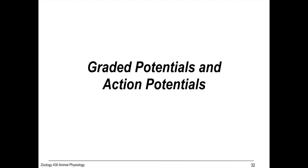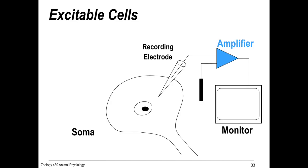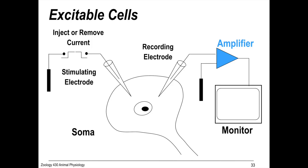Let's talk a little bit about graded potentials and action potentials. Neurons are excitable cells, and we can record their activity with a recording electrode like this and a stimulating electrode to inject or remove current. We can then measure the response in voltage and see what the voltage change is happening inside the cell.